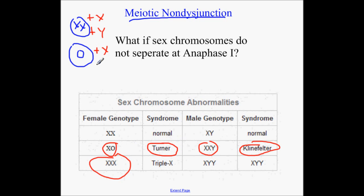And what if the empty gamete lines up with a Y? That one I like to call YO. Why is it not found as a viable baby? Because that's a dead baby — a miscarriage. The O is nothing, and the Y really has no chromosomes on it, so this baby is missing all of its chromosomes from the 23rd position.